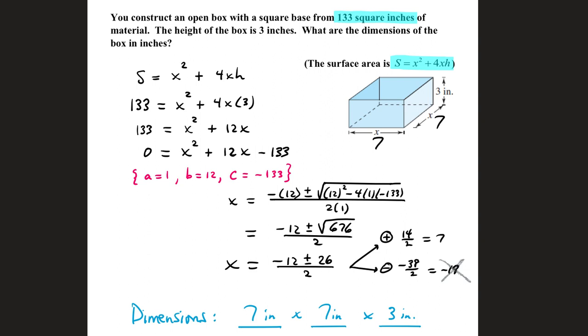The surface area is 133 square inches. The bottom of this box is x by x, that's x squared. The front, back, and two sides are all 3 by x in measurement, so there's four sides of 3x.